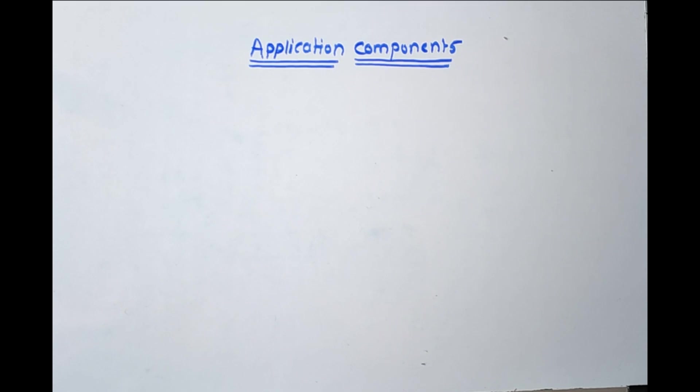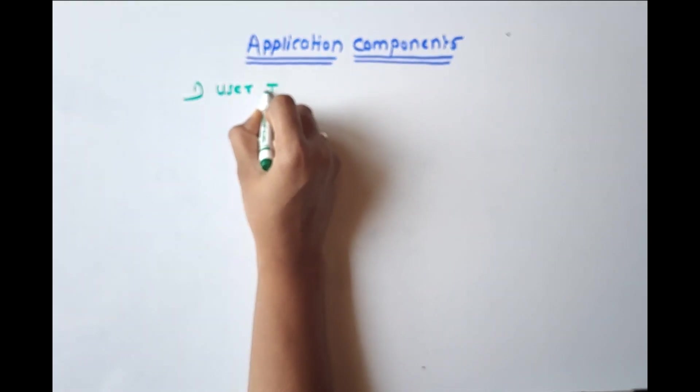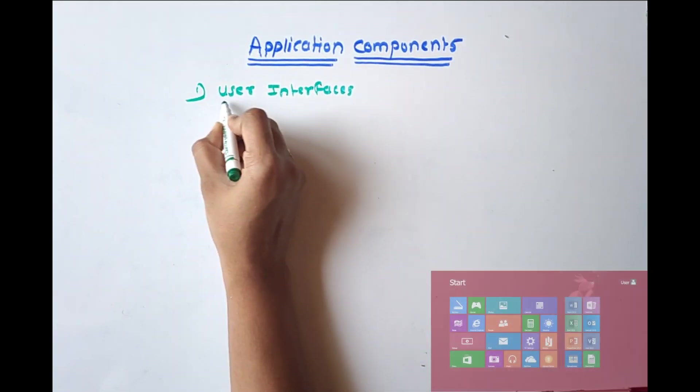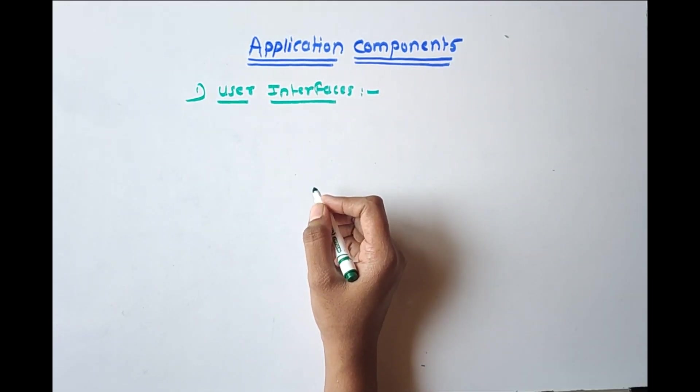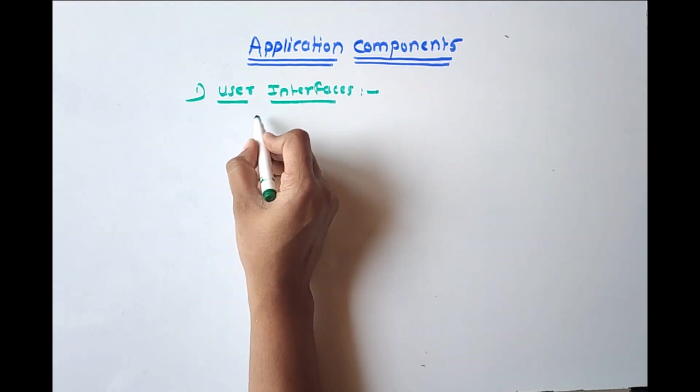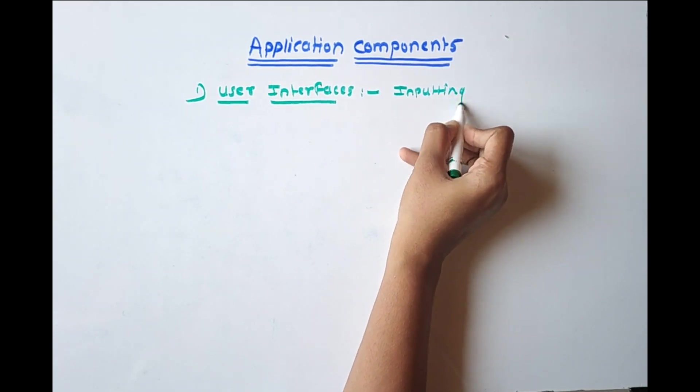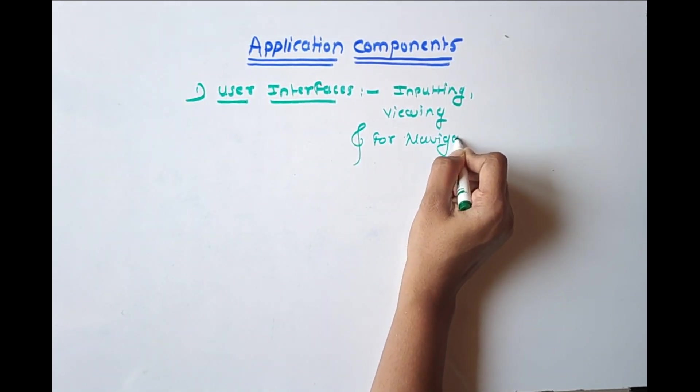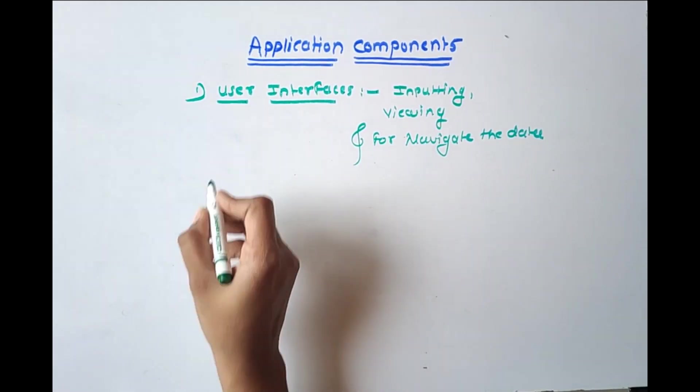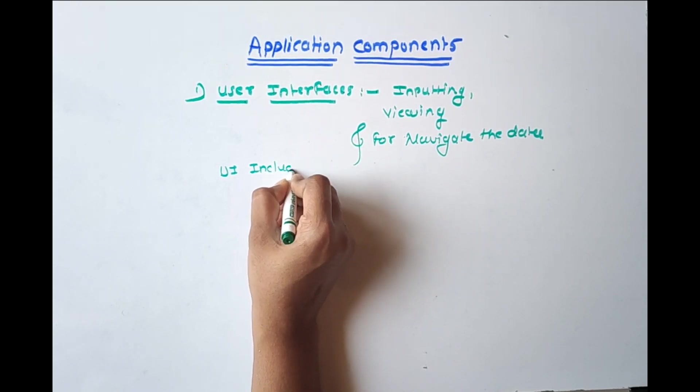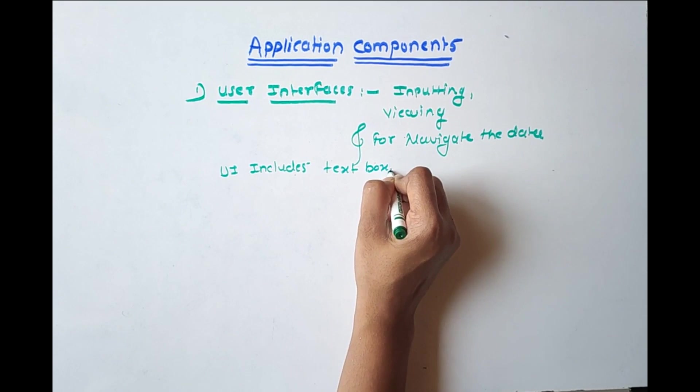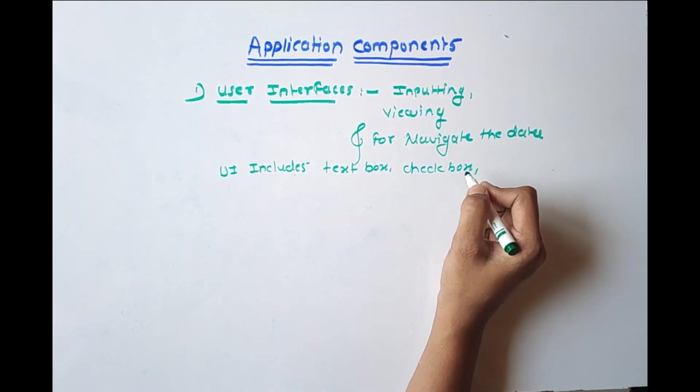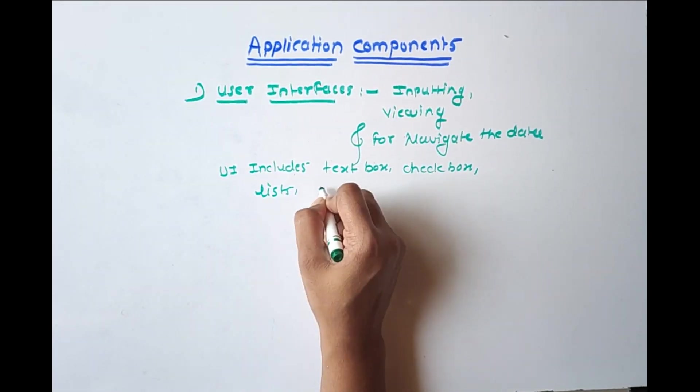Now moving to the topic, as there are nine components involved in software application, we'll discuss it one by one. So first one is user interfaces. User interfaces means communication of user with the application. It's used for inputting and viewing data and for navigation. For example, UI includes text box, check box, and list dialogue box.